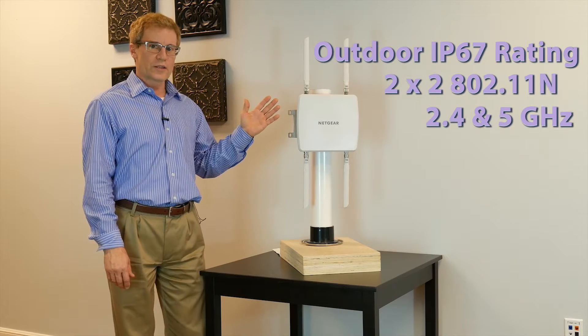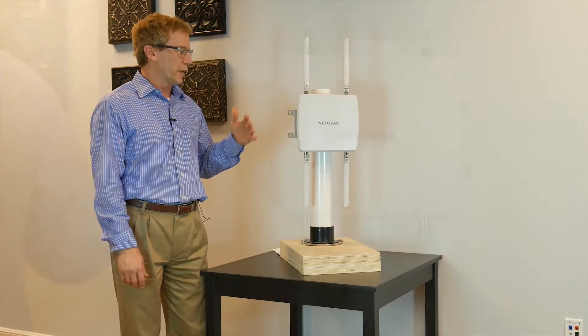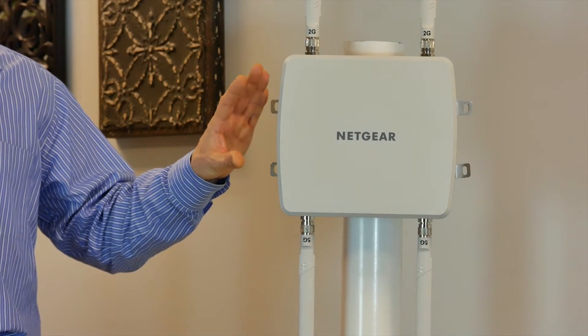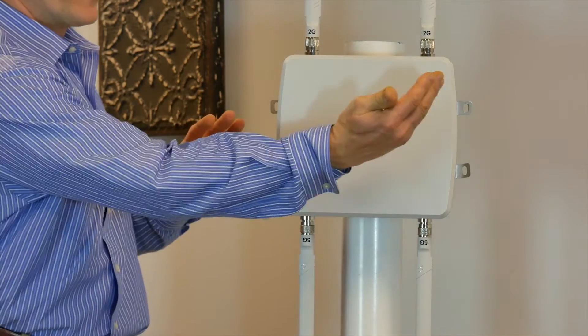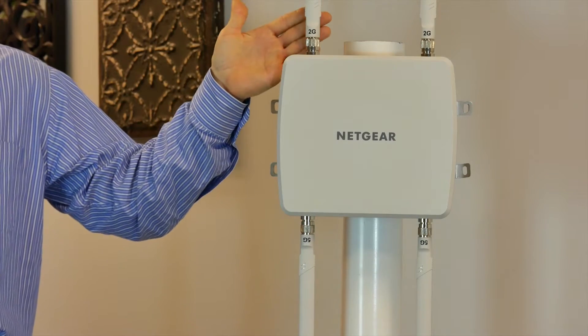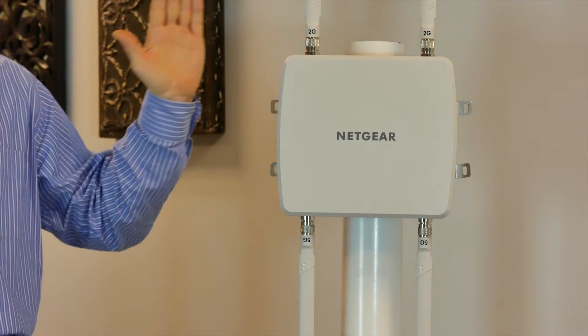This is a 2x2 access point operating on both 5 gigahertz and 2.4 gigahertz bands. When you purchase the access point, it comes with an internal antenna which provides 180-degree horizontal coverage. Optionally, you can purchase it with external antennas which will provide 360-degree horizontal coverage.